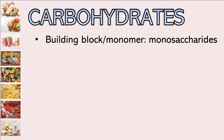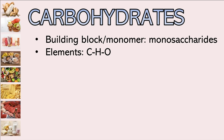Carbohydrates have a building block or monomer. For each type of macromolecule or biomolecule, we have what we call building blocks. Just like a house built from hollow blocks stacked together, you need these building blocks or monomers to produce large molecules. For carbohydrates, the monomer is a monosaccharide. The elements that comprise a carbohydrate are C, H, and O — carbon, hydrogen, and oxygen. Remember this.